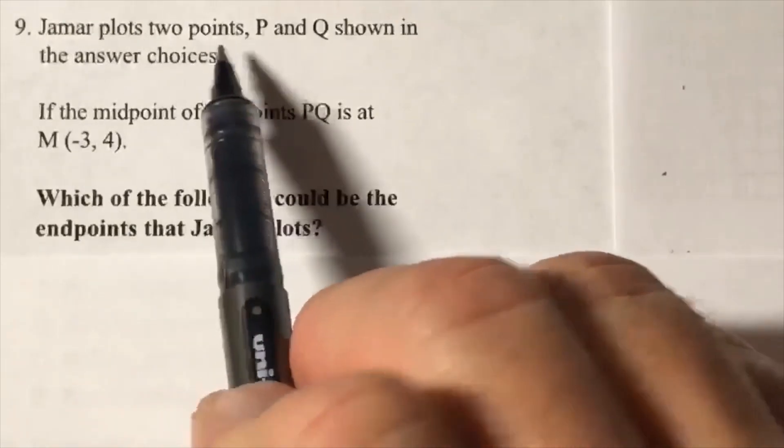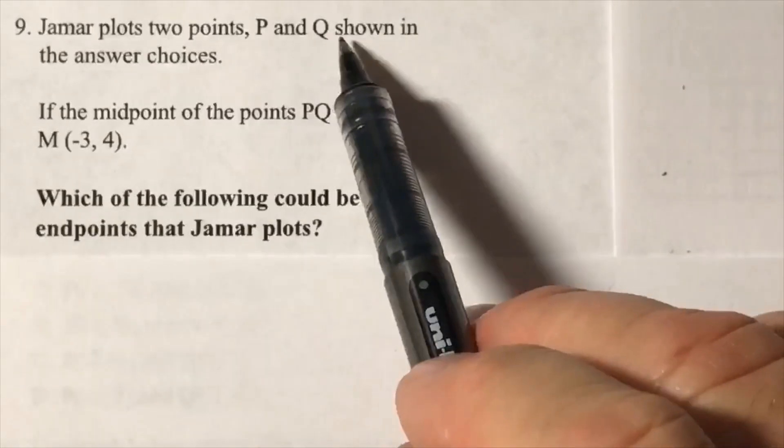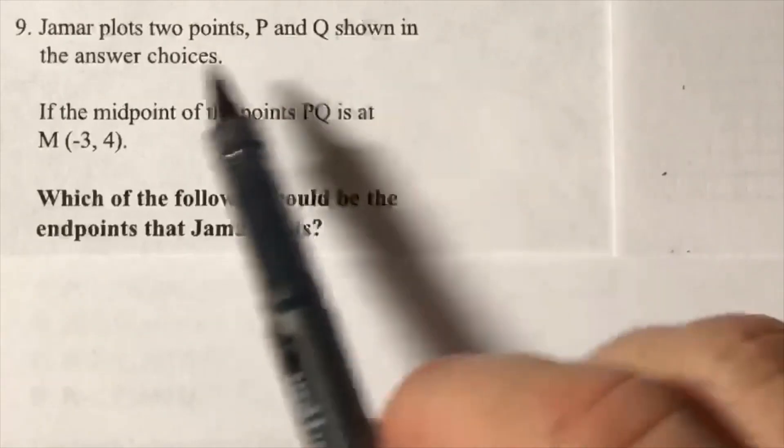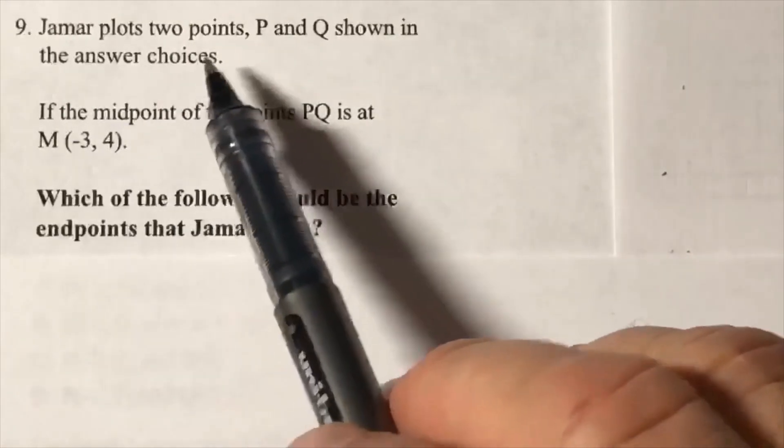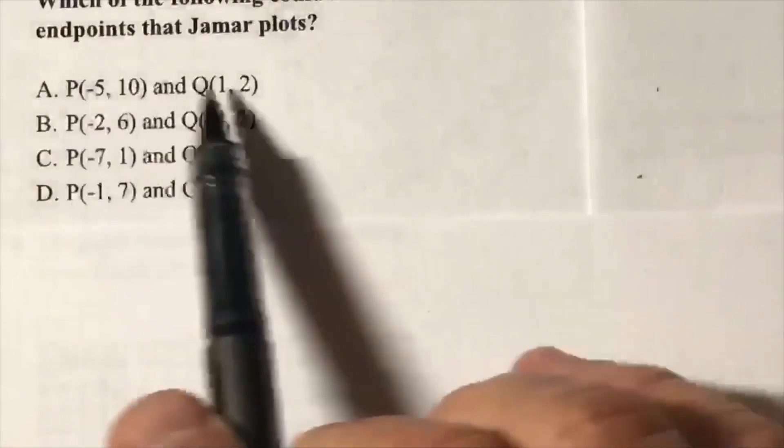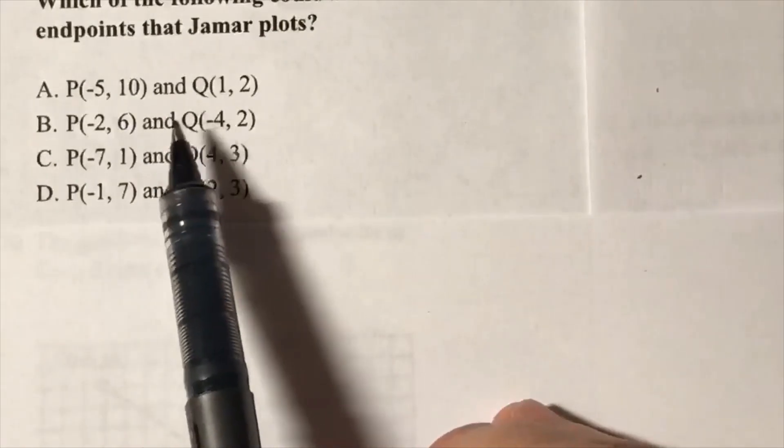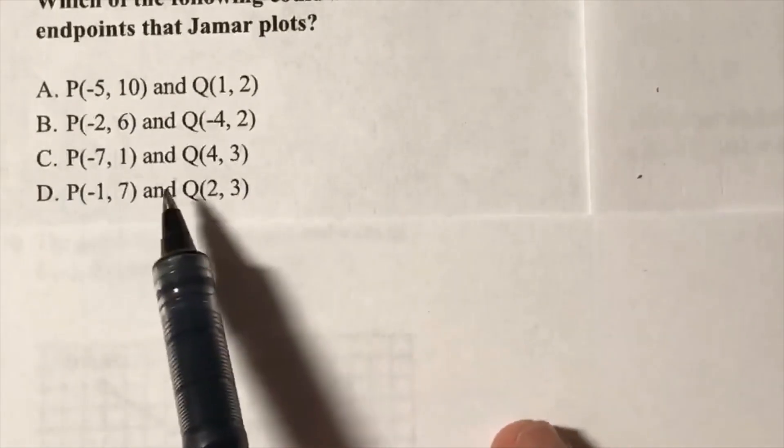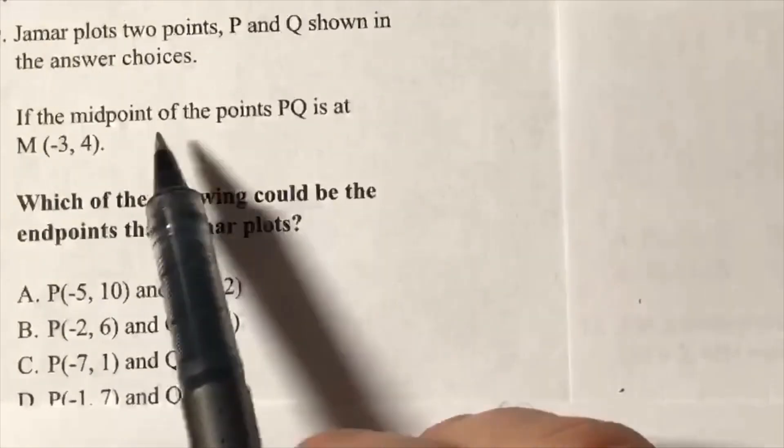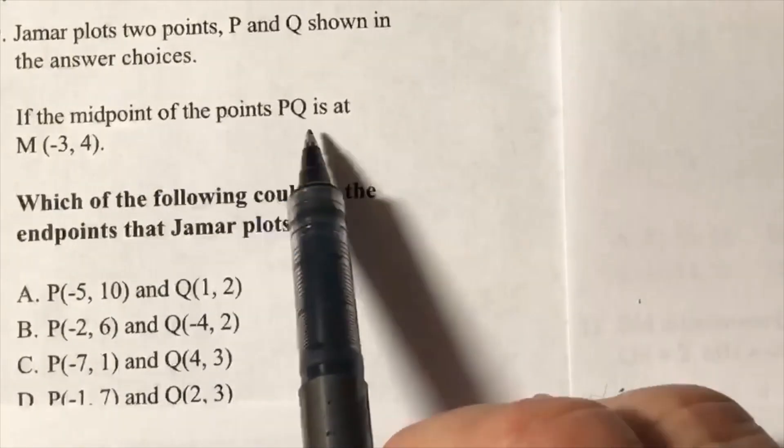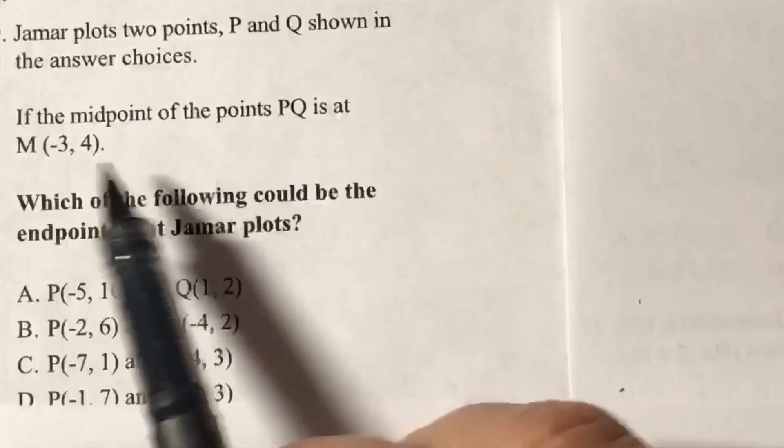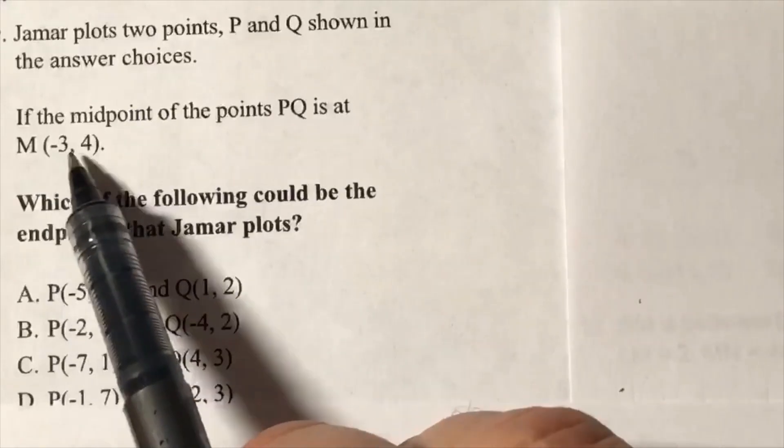Jamar plots two points P and Q shown in the answer choices. These are the two points mentioned. If the midpoint of the points P and Q is at M(-3, 4).